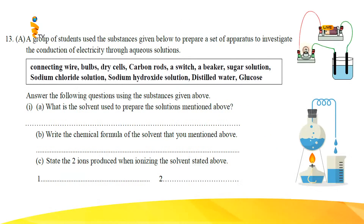In the same manner, you can prepare a sugar solution: take solute called sugar and dissolve it in the solvent called water. There are four solutions given: sodium chloride solution, sodium hydroxide solution, glucose solution, and sugar solution. In addition, distilled water is also given as another liquid. The best solvent to make those solutions is water, but here it is specifically mentioned as distilled water.